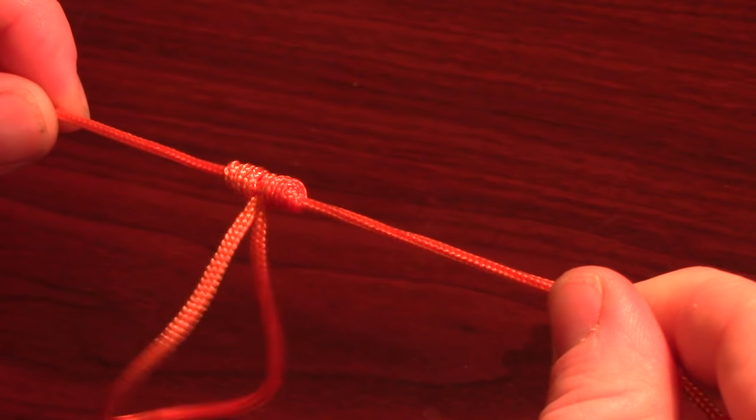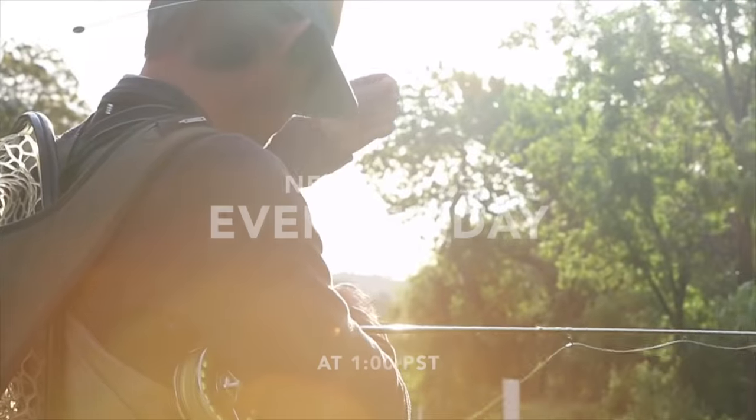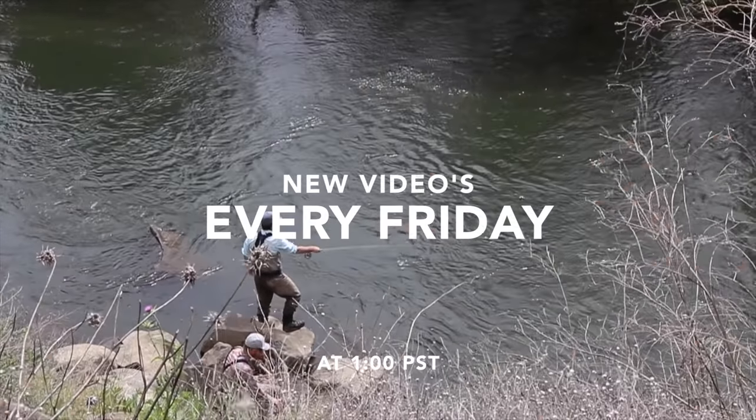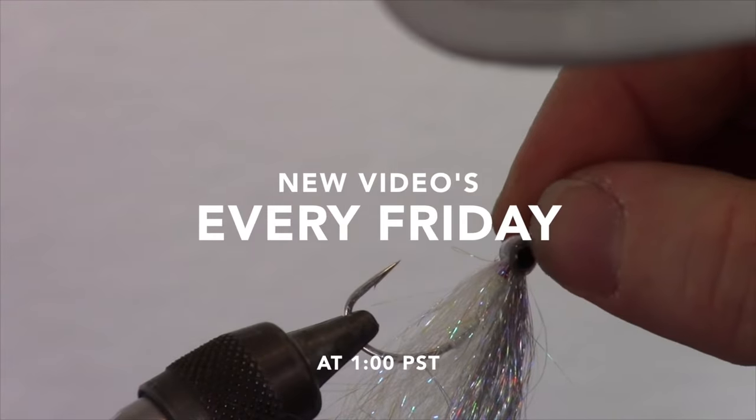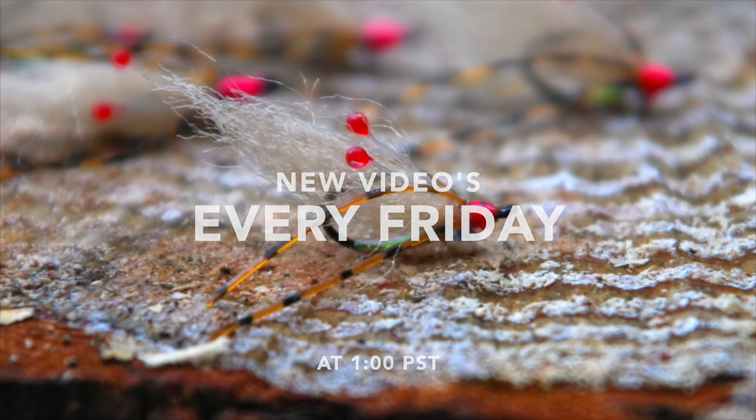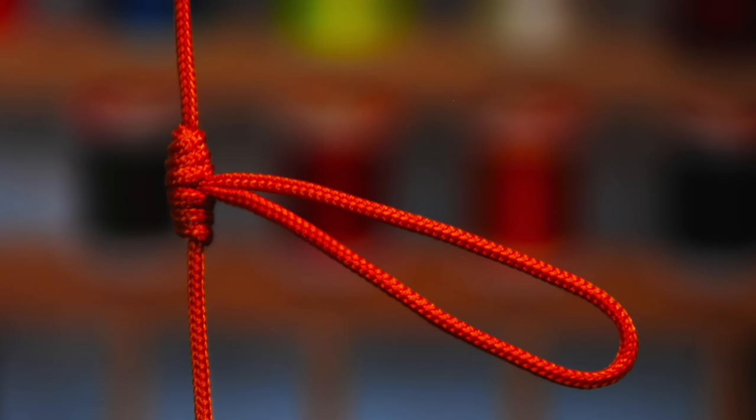The dropper loop is one of my favorite knots for making drop weight rigs. It's quick to tie and gives a strong loop in any point of your line, allowing you to put a weight on easy.